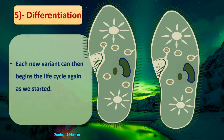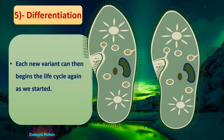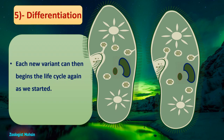Each new variant can then begin the life cycle again. Thank you — that was the sexual life cycle of paramecium or ciliate protozoans.